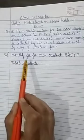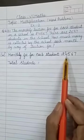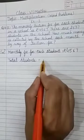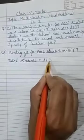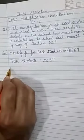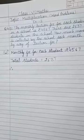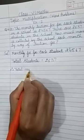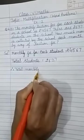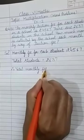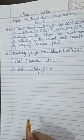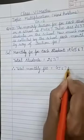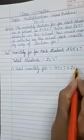So for that, let us start this question. Here in solution we will write first: monthly fee for each student, it is how much? Rs. 4567. Now, how many total students are there? There are total 2637 students. So therefore, what we have to find out? We have to find out the total monthly fee.